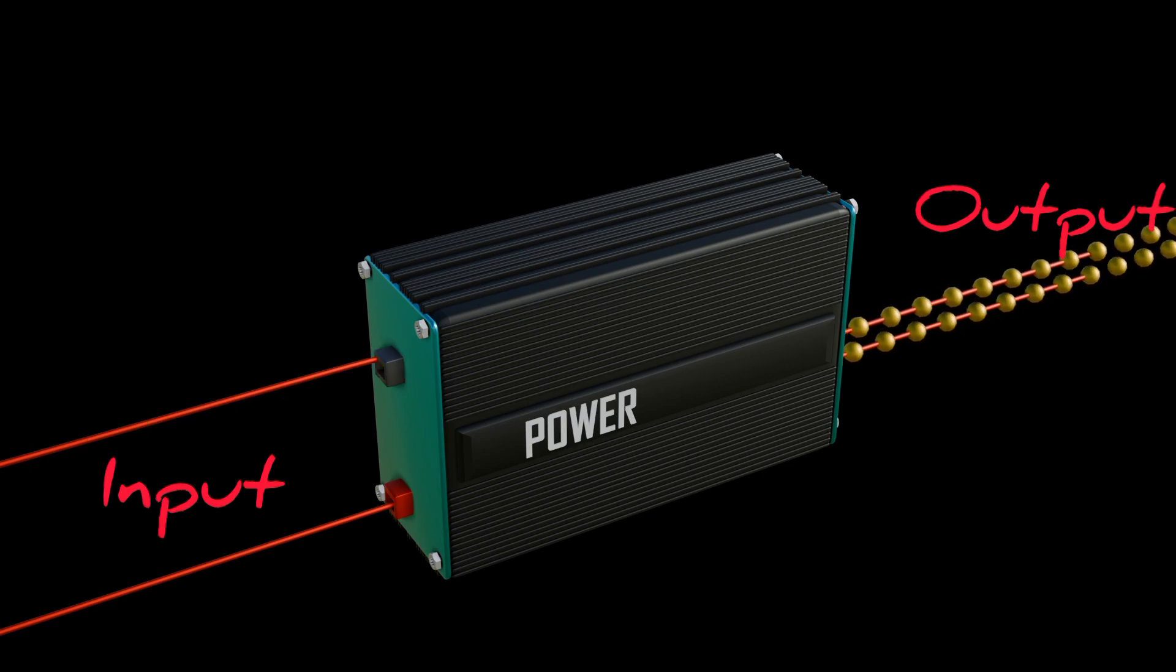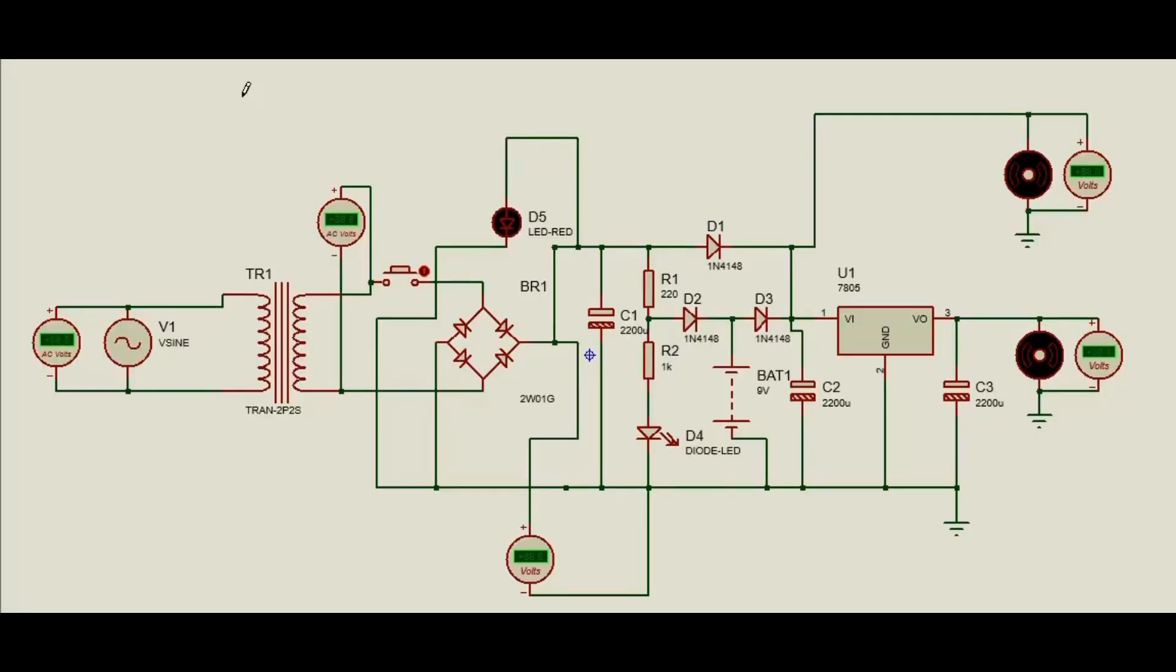A basic model of the UPS we have simulated in Pro2 software. We have a transformer for step-down voltage, a bridge rectifier for AC to DC rectification, a filter circuit, a battery, a voltage regulator, and a load.